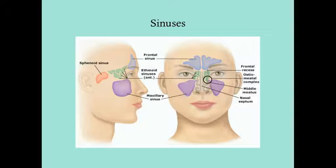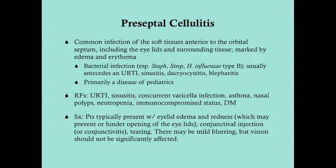Preseptal cellulitis is a common infection of soft tissues anterior to the orbital septum, confined by the orbital septum. It includes the eyelids and surrounding soft tissue and is marked by what we expect with a bacterial infection: edema, erythema, and warmth — your cardinal signs of inflammation: rubor, calor, dolor, etc.